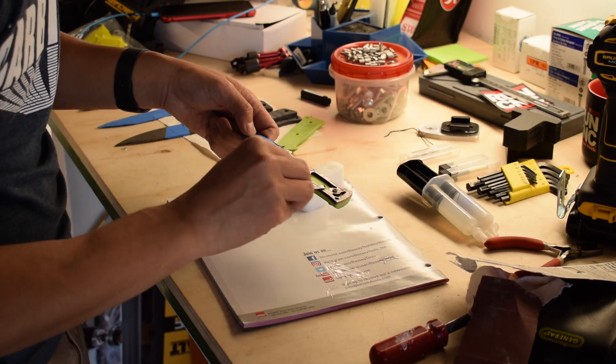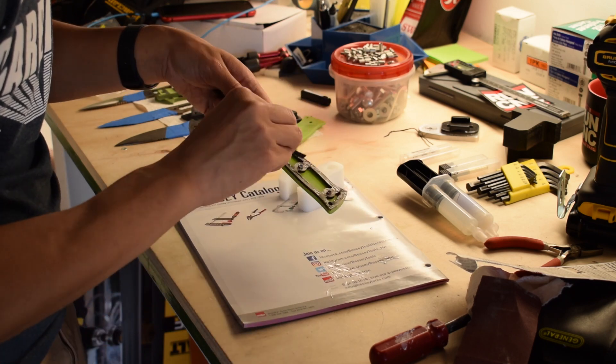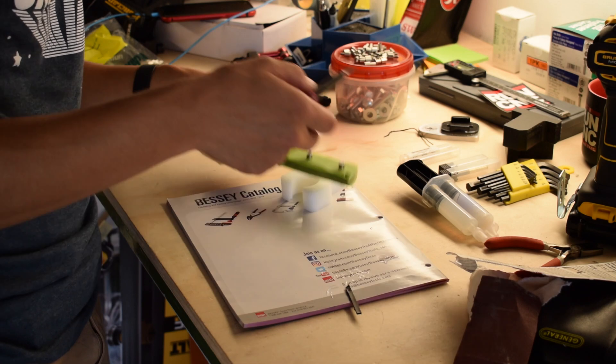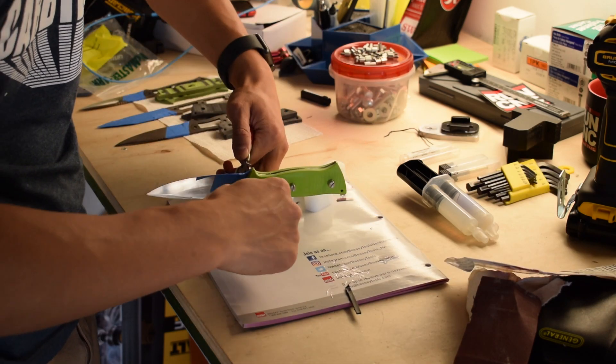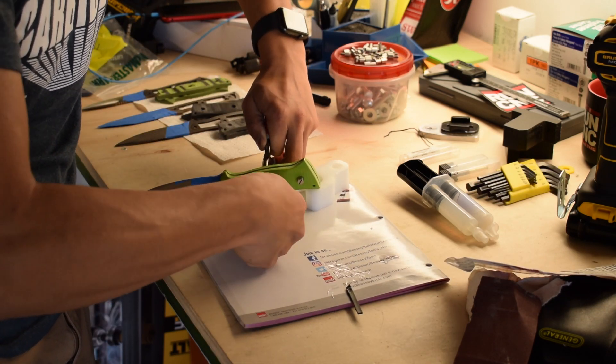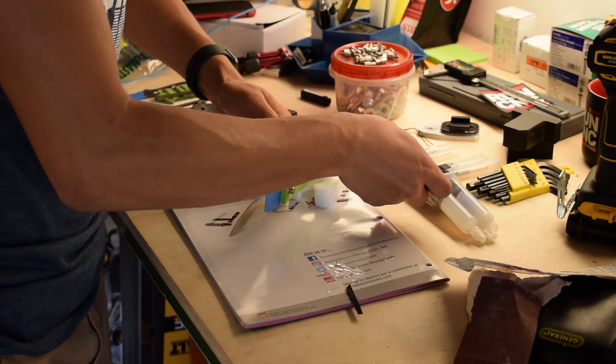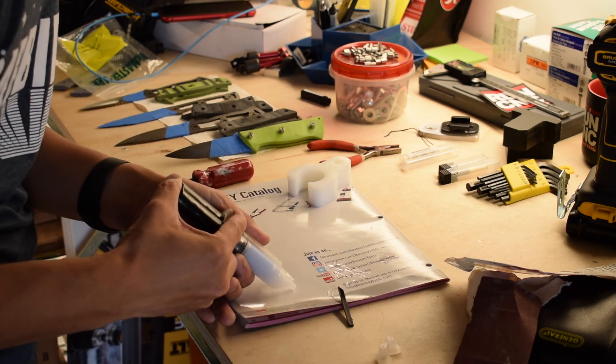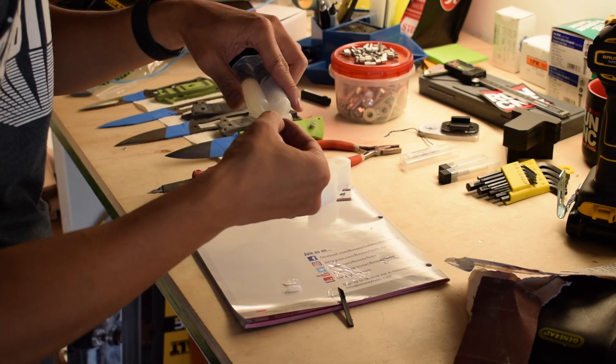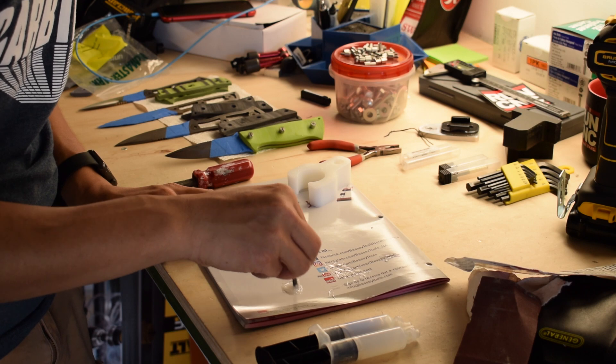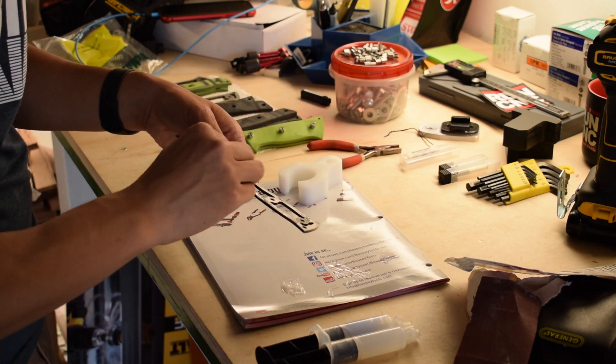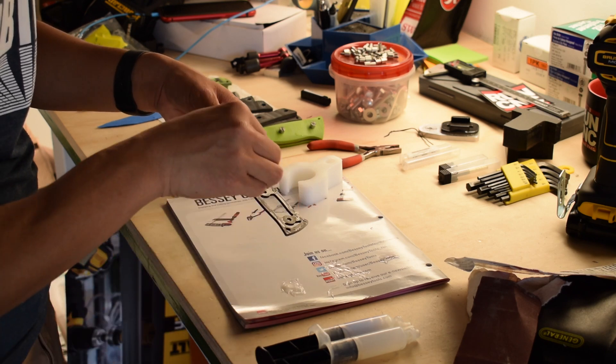Some people would say that you should use a slower curing epoxy because it's stronger, but unless you plan on pulling some type of Bear Grylls level stunt where your life depends on a knife handle not delaminating on you while you stress it far beyond the bounds of reason, 5 minute epoxy will be just fine. When you have the scales on, tighten the corby bolts with a pair of screwdrivers. While the epoxy cures, you can wallow in your regret and misery for choosing stainless steel corby bolts.